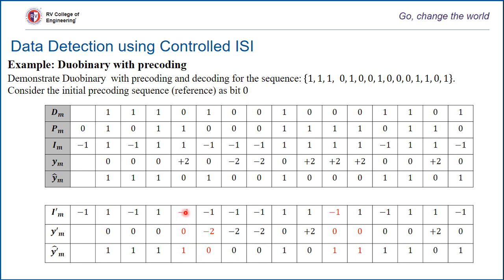Where there is an error and where there is no error, the combination of error with non-error gives only 2 bit errors; otherwise this error will not appear anywhere else. Unlike duobinary without precoding, where there was subsequent subtraction causing further propagation. Without precoding there was a maximum of 4 bit errors, whereas with precoder it is limited to 2 bits. This video only deals with duobinary signaling, and the next video lecture will talk about modified duobinary with precoder and without precoder, considering cases like those discussed here.